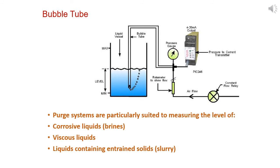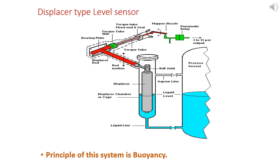Another type is displacer type level sensor. In the picture, you can see the tank with two legs taken from the bottom and top, connected to another small vessel equivalent to the tank level. Inside, the principle of buoyancy is working. A displacer is inside the small tank and moves up and down according to the level inside the vessel. The principle of this system is buoyancy.